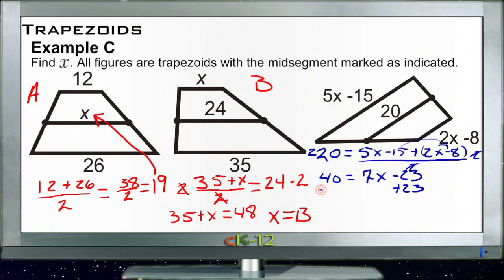We add 23 to both sides, cancels here, we get 63 equals 7x. So divide both sides by 7, cancels here, cancels here, and we get x equals 9.